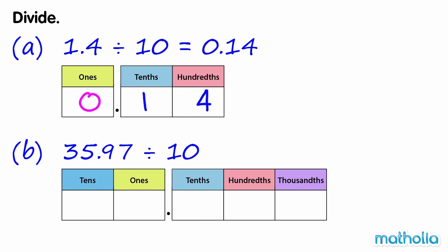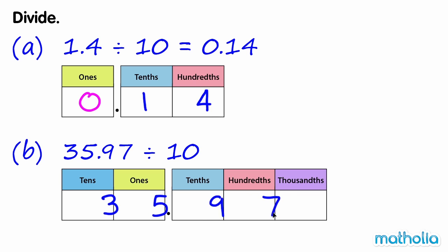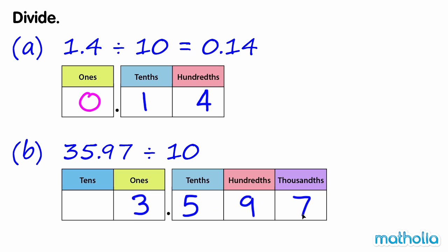B. 35.97 divide 10. Write 35.97 in the place value chart. Shift the digits one place to the right. 35.97 divide 10 equals 3.597.